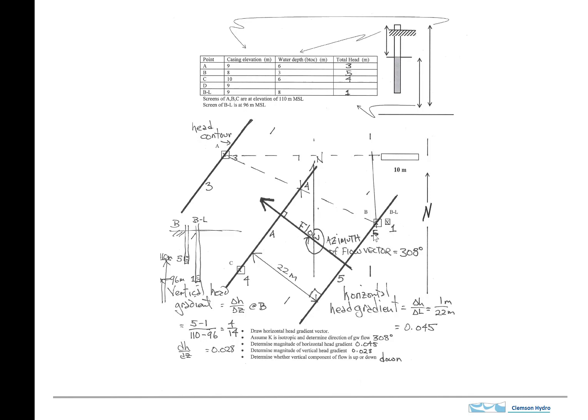So we've got heads of 5 and a head of 1, and BL is screened in a lower aquifer. So I drew here a little cross-section, and we can see that BL has a head of 5, and then the elevations of B and BL are given here, 110 and 96.